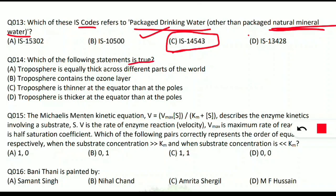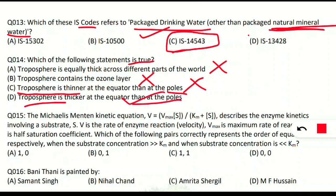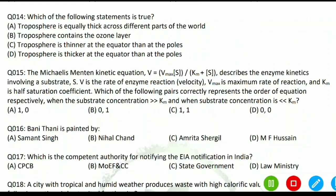Question 14: which of the following statements is true? Statement 1 — troposphere is equally thick across different parts of the world: wrong. Statement 2 — troposphere contains the ozone layer: wrong; troposphere contains ozone molecules but the ozone layer is in the stratosphere. Statement 3 — troposphere is thinner at the equator than at the poles: wrong. Statement 4 — troposphere is thicker at the equator than at the poles: correct. Option D is the answer.